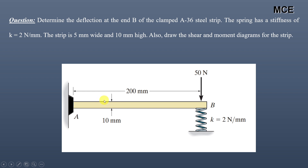The steel strip has a length of 200 mm, a width of 5 mm, and a depth of 10 mm. A force of 50 N is applied at end B, and there is also a spring of stiffness 2 N/mm at end B. We need to find the deflection at end B and draw the shear and moment diagrams.